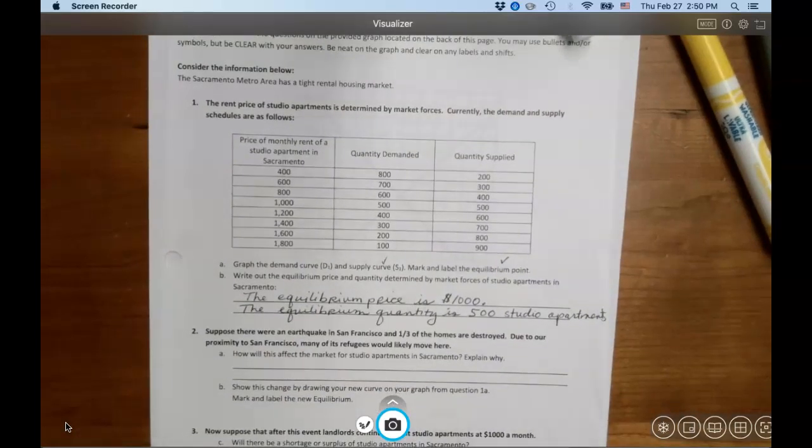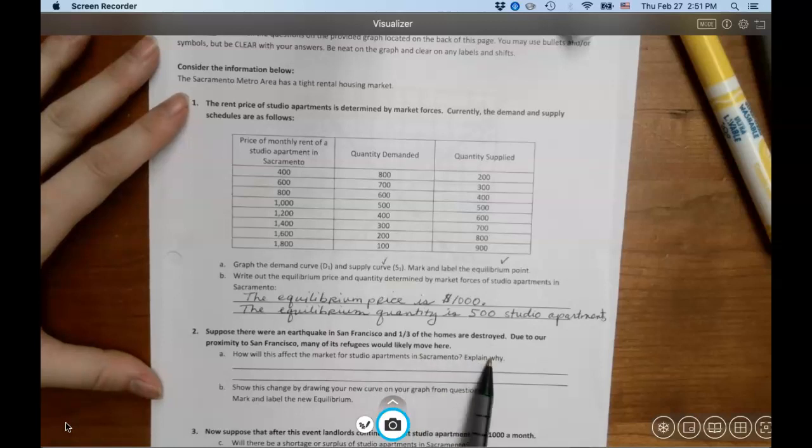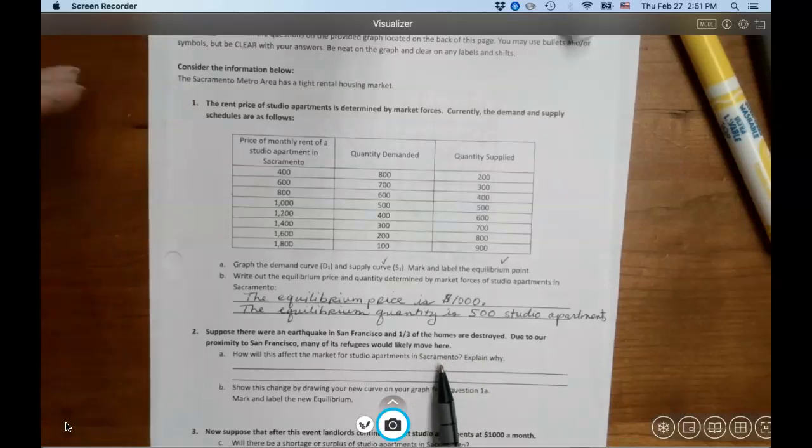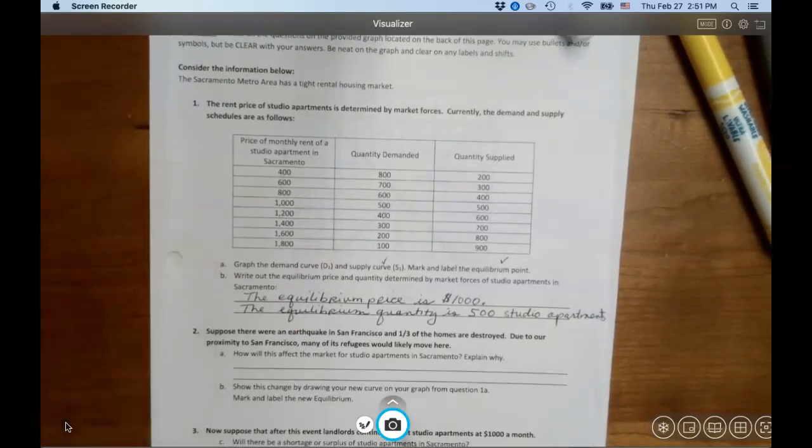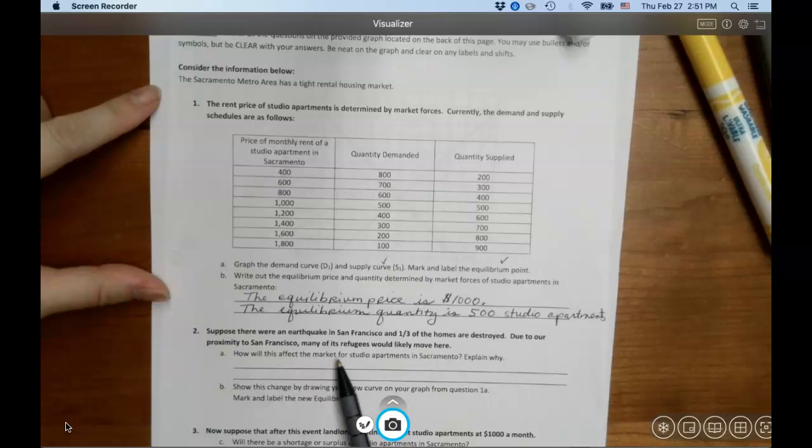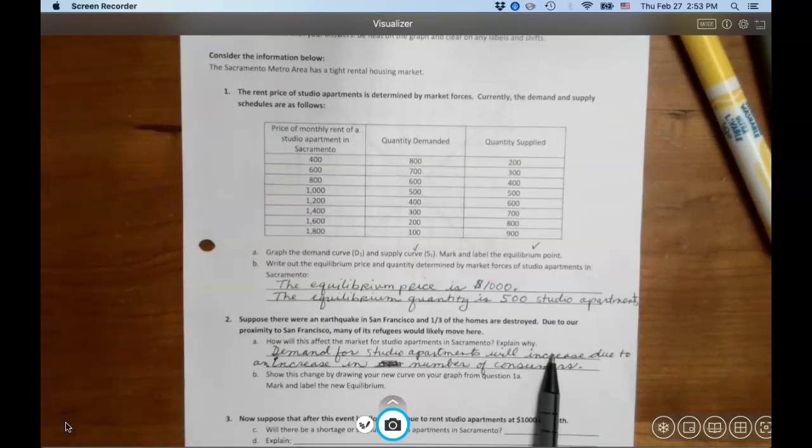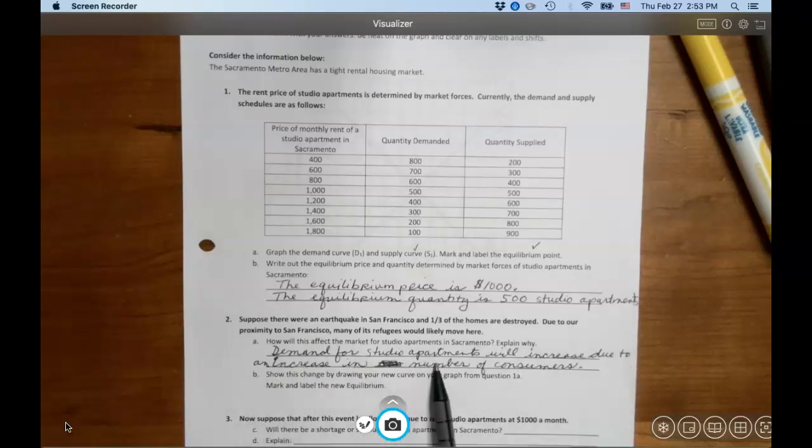Okay, suppose there were an earthquake in San Francisco and one-third of the homes are destroyed. Due to our proximity to San Francisco, many of its refugees would likely move here. So, how would this affect the market for studio apartments in Sacramento? Explain why. So they're asking for two different answers here. In our quizzes that we took on supply and demand, there were two different boxes where you needed to write sentences. That's what you do here. Box number one answer, box number two answer. How does this affect the market and why? What's the determinant going on here? Okay, you do it on your paper, I'll do it on mine. So, demand for studio apartments will increase, that's the first question I answered, and then why? Due to an increase in number of consumers.